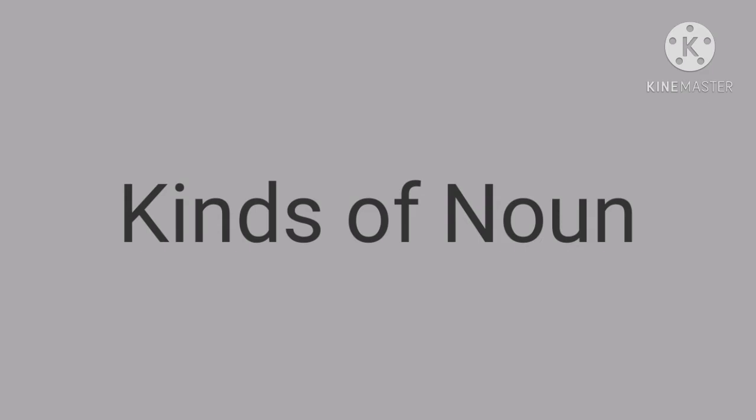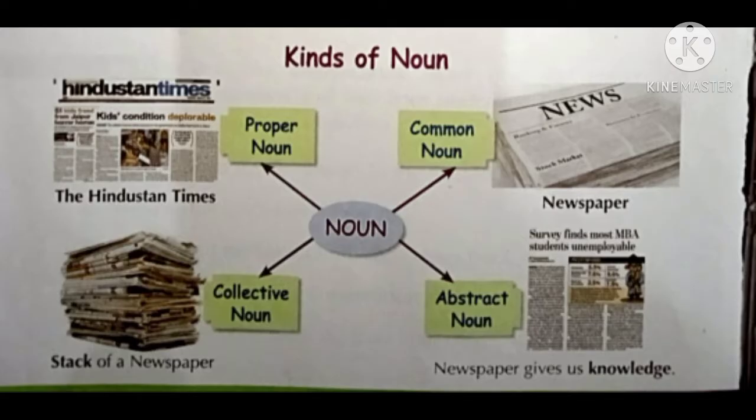Kinds of noun. Noun kitne types ke hoti hain? So, there are four types of noun in English. First is proper noun. Second, common noun. Third, collective noun. And fourth, abstract noun. So, let's move forward to our first kind of noun, that is proper noun.